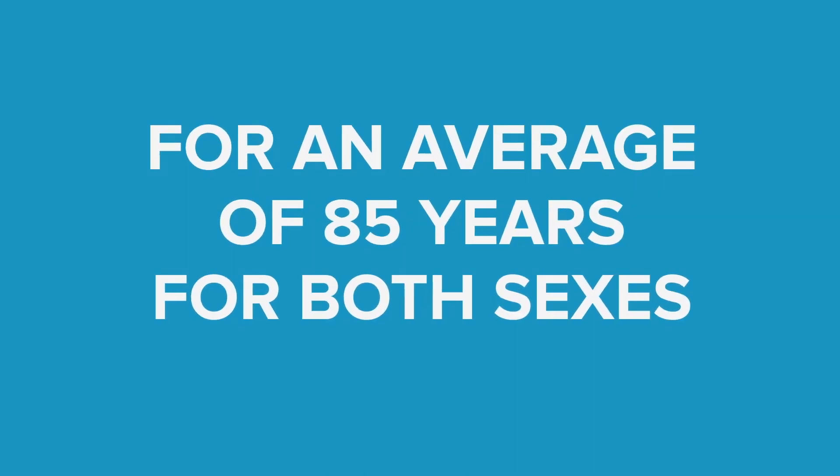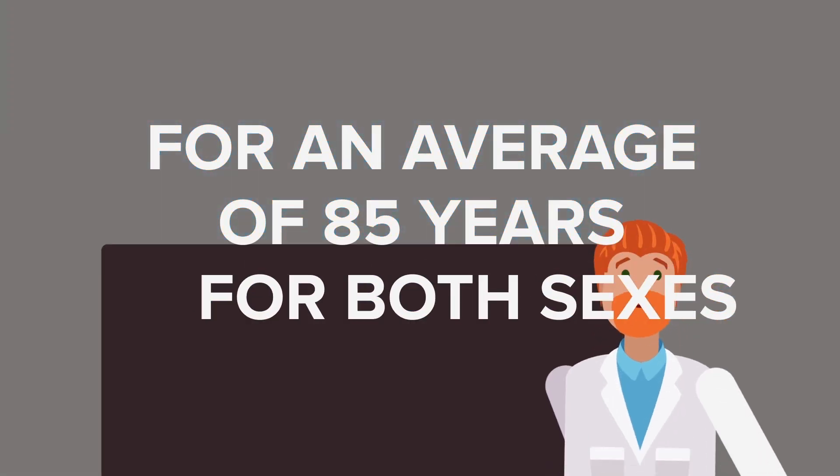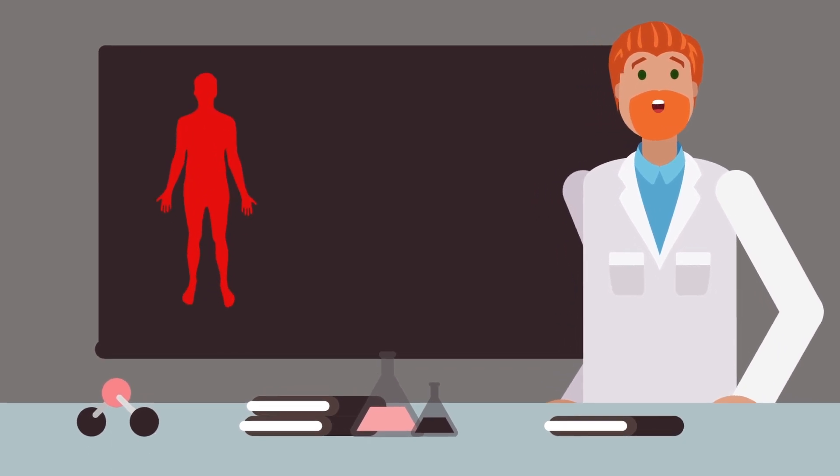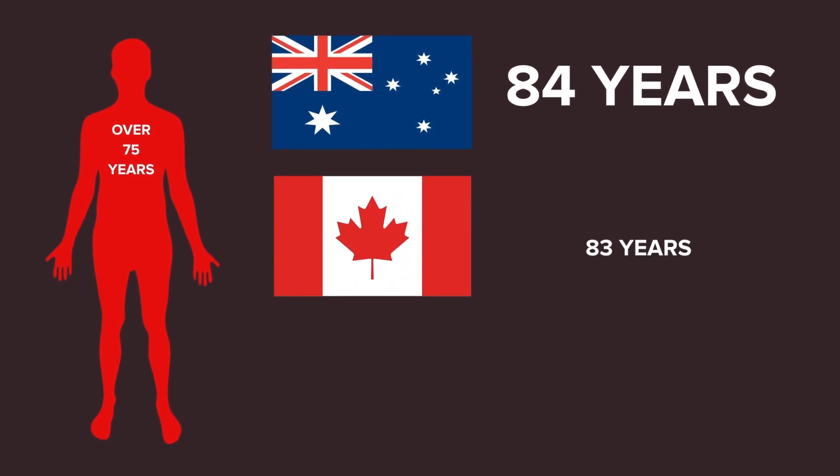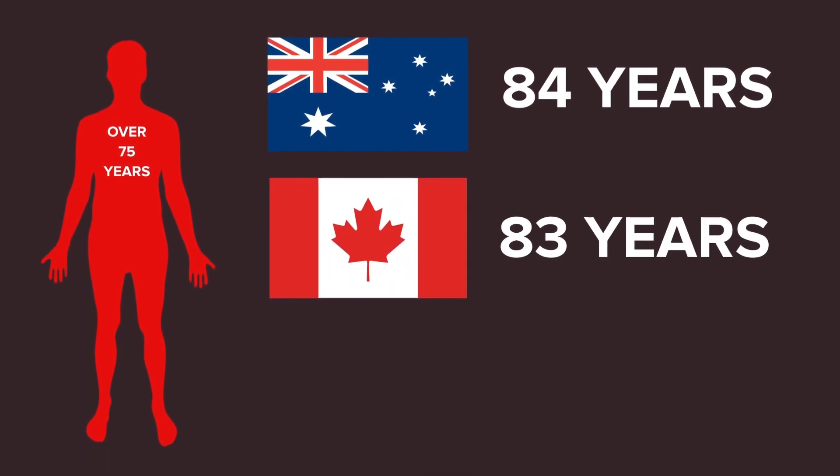Most developed countries have an average life expectancy of over 75 years. Australians live an average of nearly 84 years, Canadians can expect to stick around for almost 83 years on average, and Americans have a life expectancy of about 79 years.